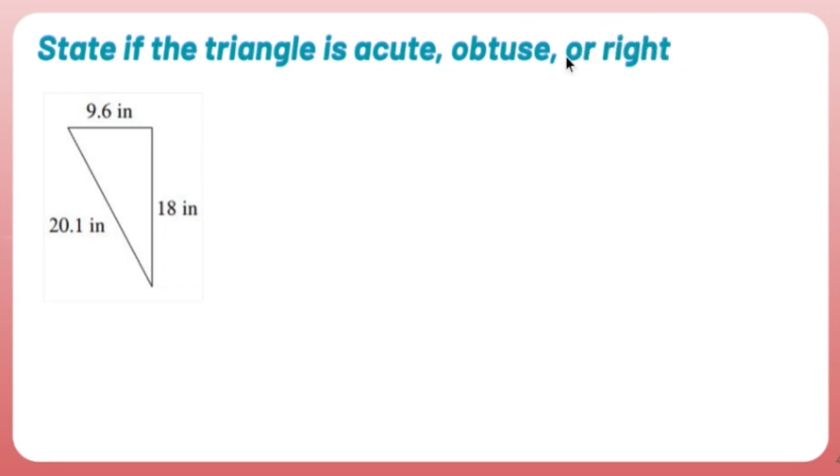We know that we could use the Pythagorean Theorem Converse to determine if something is a right triangle by saying a squared plus b squared equals c squared. That's how you know if something's right. But how do you know if something is acute or obtuse?